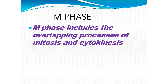M phase includes the overlapping process of mitosis and cytokinesis. M phase is also called the mitotic phase, which is further subdivided into four sub-stages: prophase, metaphase, anaphase, and telophase. After completion of telophase, the cell divides itself into two daughter cells that have the same composition of DNA as the mother cell. And thus, the cell completes its cell cycle.